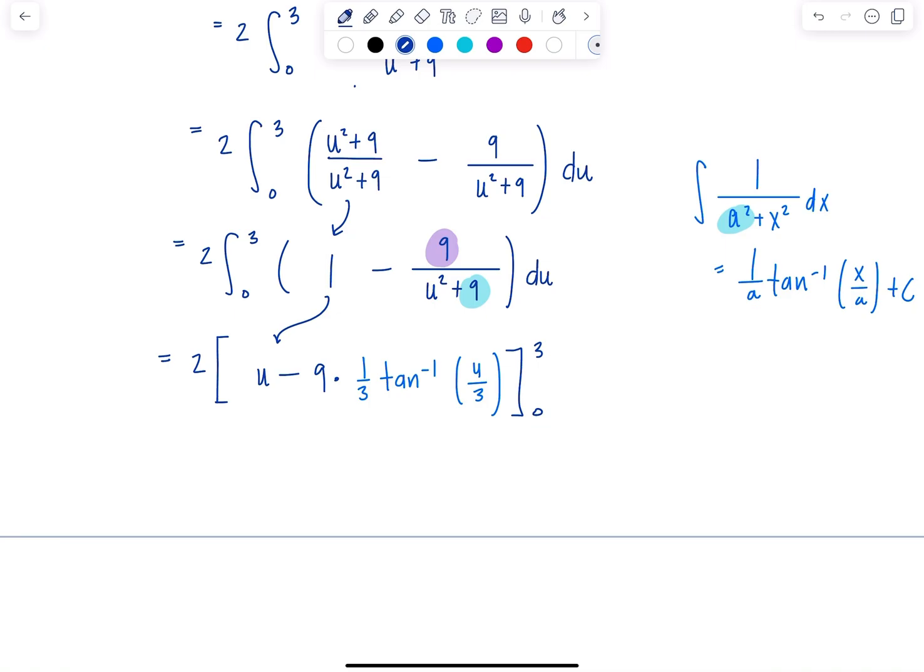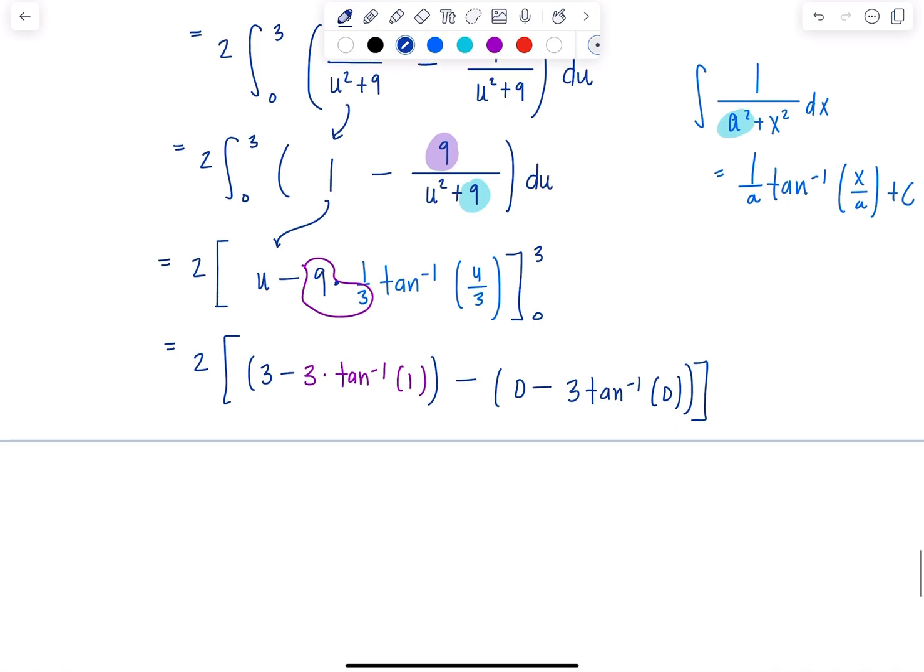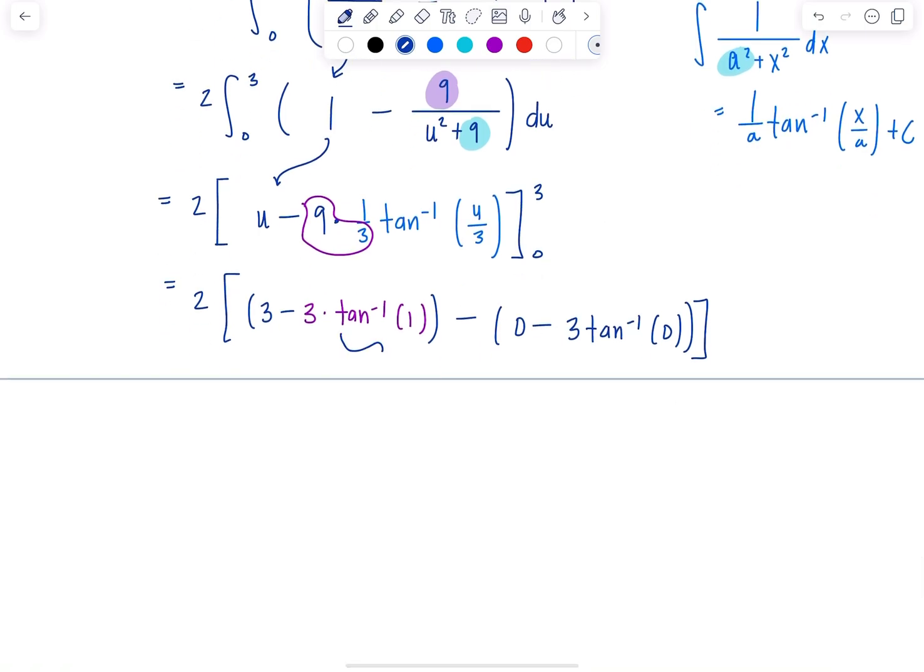Leave the 2 outside till the very end. So this is 2 times, let's plug in that upper limit. 3 minus, this is just a 3, times tan inverse of 3 over 3, which is 1. That's the upper limit, minus 0 minus 3, tan inverse of 0 divided by 3. Tan inverse of 1, that's pi over 4. Tan inverse of 0 is 0. So this whole evaluation at the lower limit is 0.